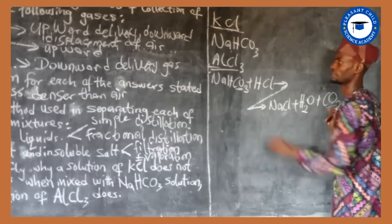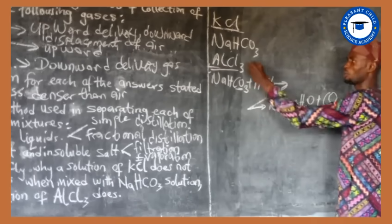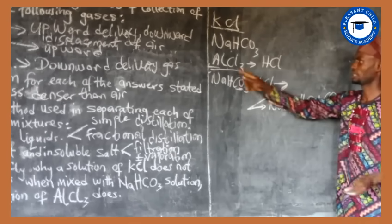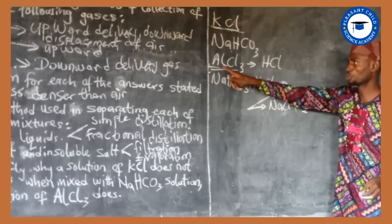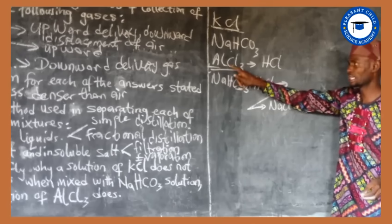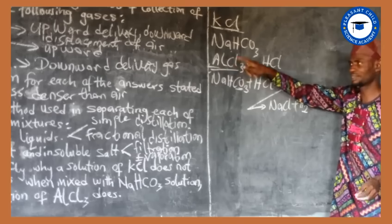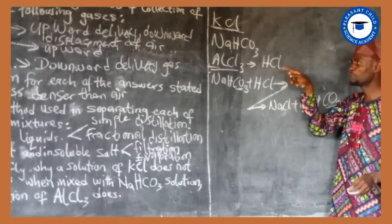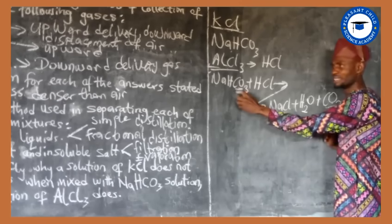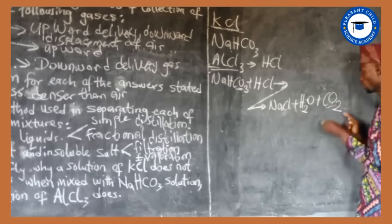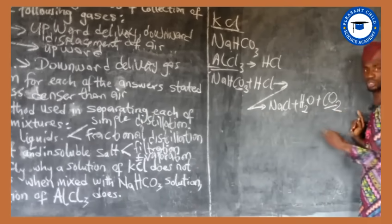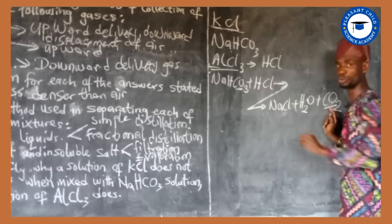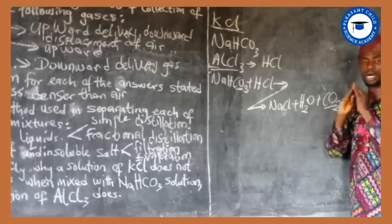But when it comes to AlCl3 (aluminum chloride), aluminum chloride will hydrolyze to give hydrochloric acid. Addition of water to AlCl3 produces hydrochloric acid. Because of that, the hydrochloric acid will react with sodium hydrogen carbonate to give a gas. The key reason is that KCl does not undergo hydrolysis, so it does not produce hydrochloric acid when water is added.